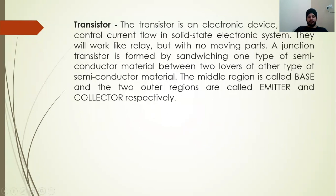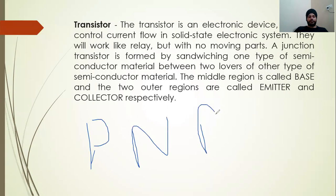Next is the transistor. What is a transistor? A transistor is a device used to control current flow in solid-state electronic systems. It works like a relay but with no moving parts. A transistor is a combination of different types of semiconductors: PNP and NPN. In a PNP transistor, P is the emitter, N is the base, and P is the collector. This is a complete transistor called a PNP transistor, and it is used to control current flow.